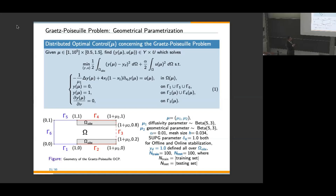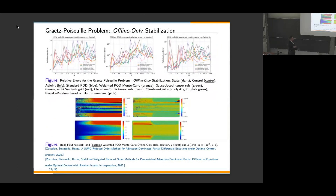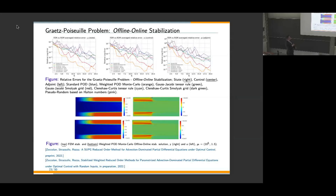We study two problems. First: distributed optimal control for a Graetz-Poiseuille flow in a channel with Dirichlet boundary conditions, an observation zone, and a control domain. The diffusivity parameter spans Péclet numbers from 1 to 10^5, with geometrical parameterization of the channel length and an associated beta function. With offline-only stabilization, neither the finite element nor the weighted POD Monte Carlo solution is stable.